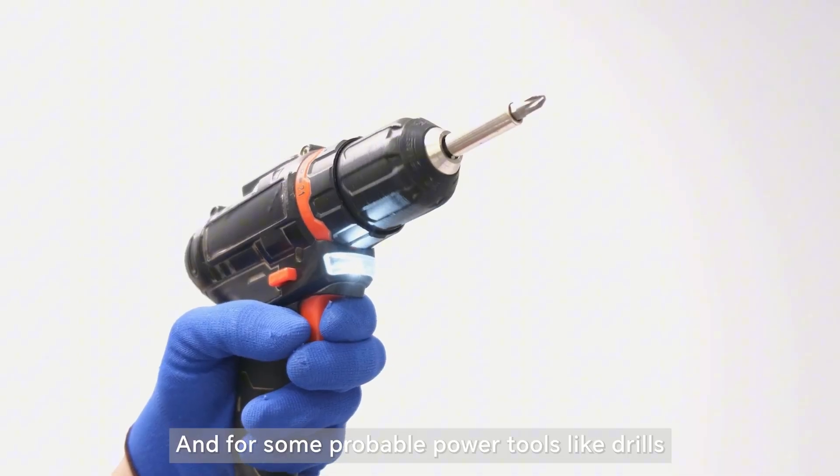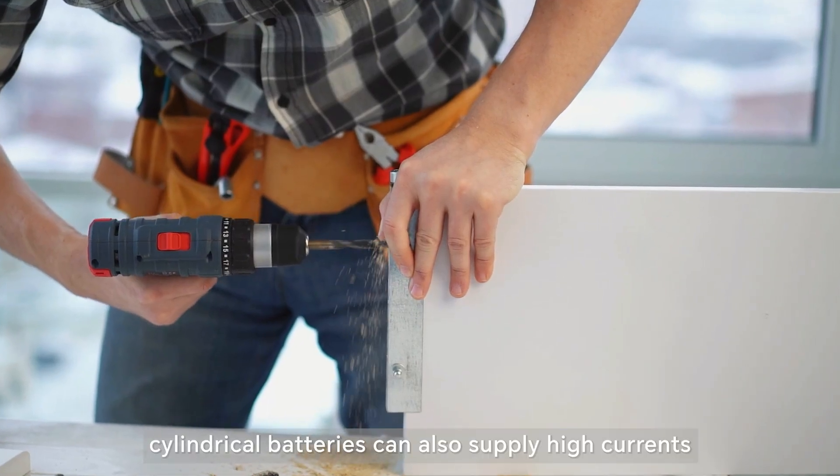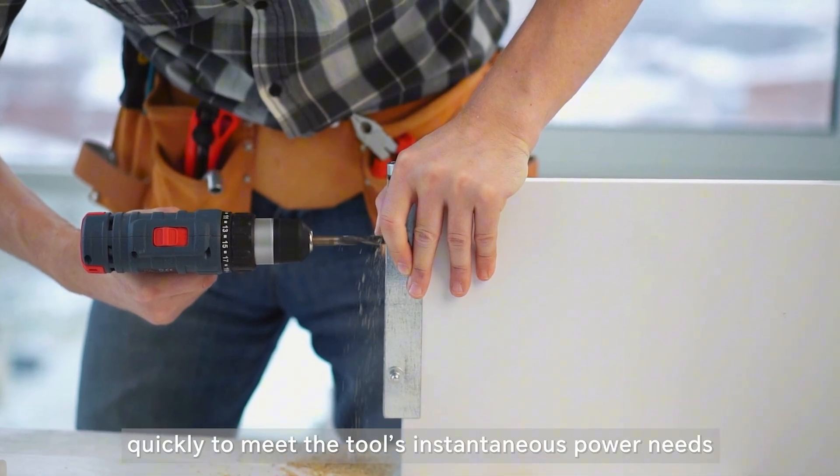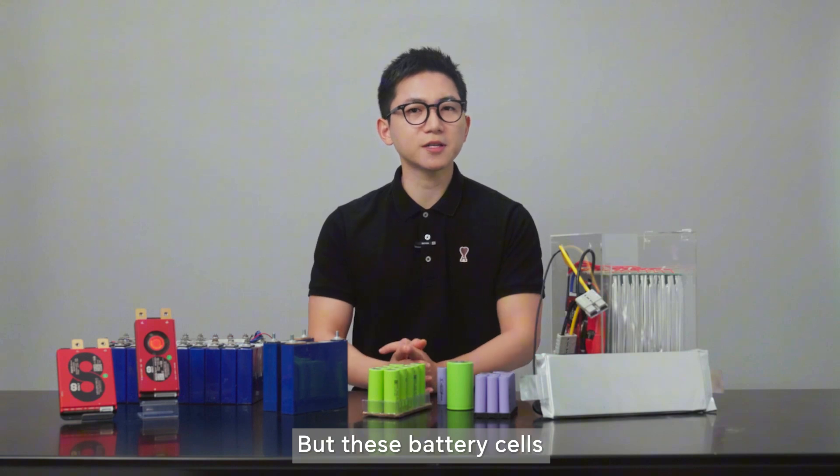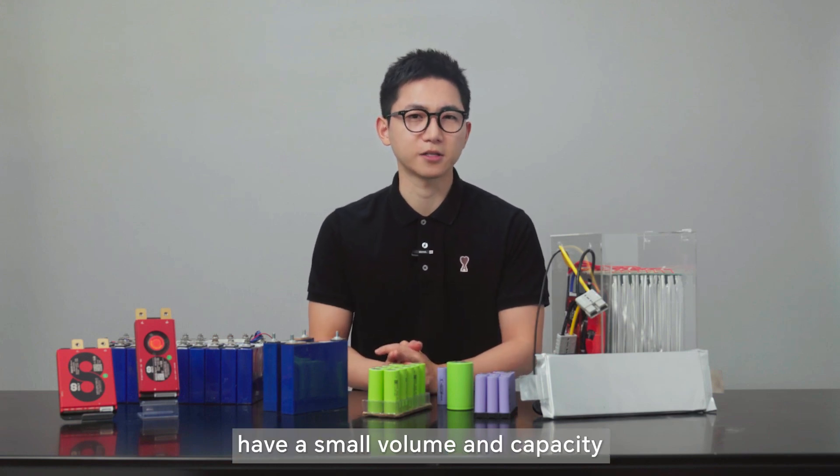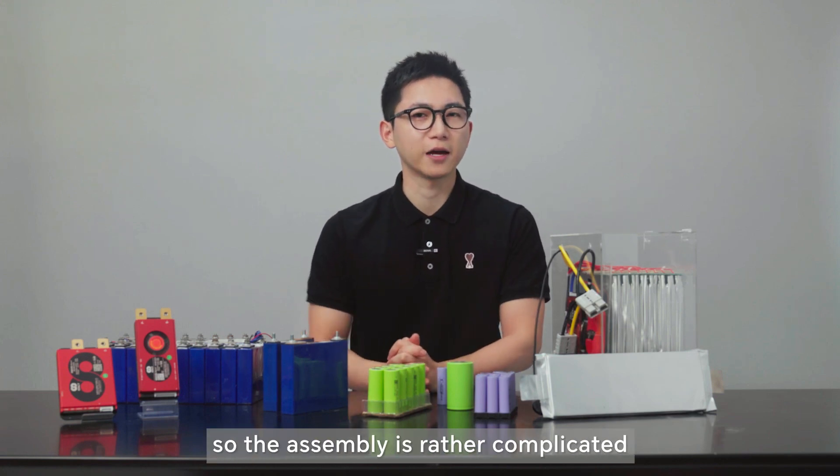And for some portable power tools like drills, cylindrical batteries can also supply high current quickly to meet the tool's instantaneous power needs. But these battery cells have a small volume and capacity, so the assembly is rather complicated.